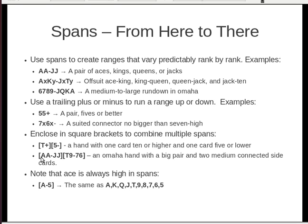For Omaha, if you put aces-to-jacks in brackets and ten-nine to seven-six in brackets, it's a hand with a big pair and two medium connected cards.